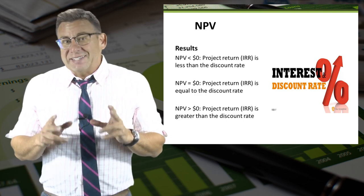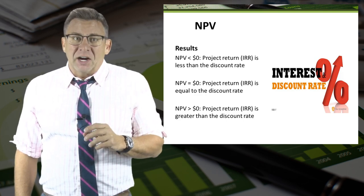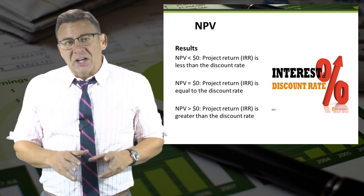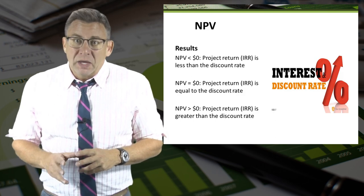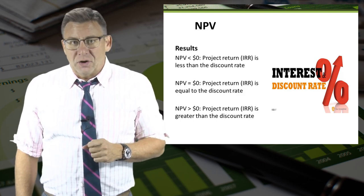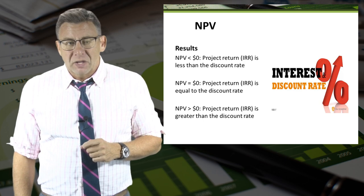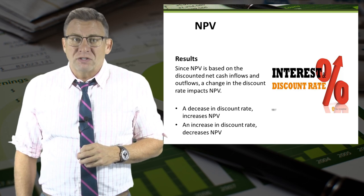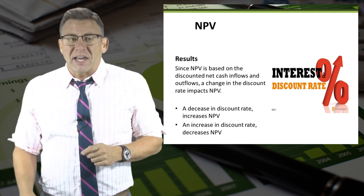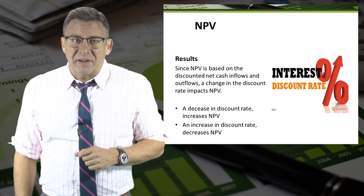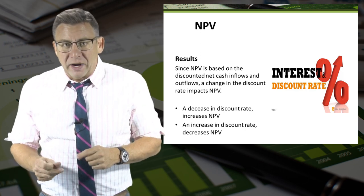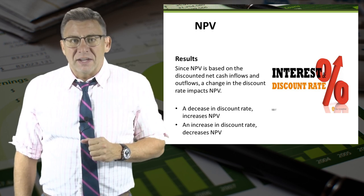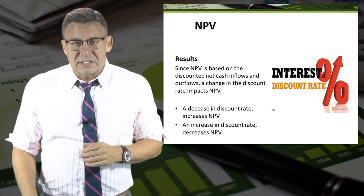When net present value is equal to zero, it means that the IRR equals the discount rate. And when net present value is greater than zero, it means that the IRR is greater than the discount rate. Since net present value is based on discounted net cash inflows and outflows, a change in the discount rate impacts net present value. A decrease in the discount rate increases net present value, and an increase in the discount rate decreases net present value.